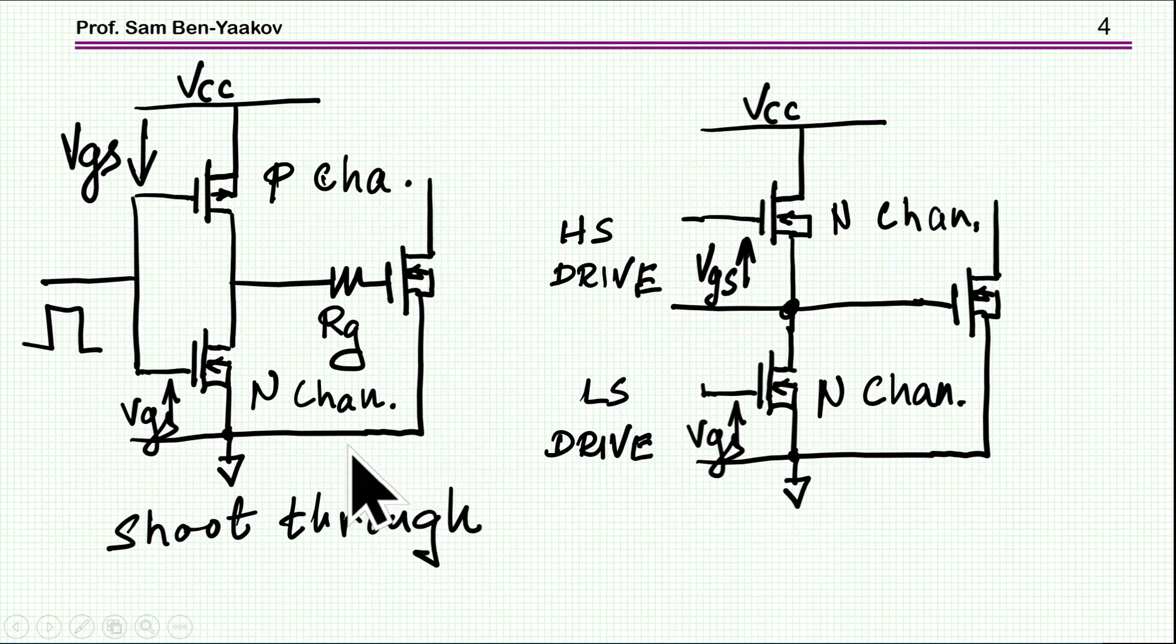Now in this application note, TI suggests to use two transistors, two N-channel transistors, which is better even from the fact that N-channel transistors is better than a P-channel in terms of RDS-on and cost. And however, in this case, you need two drives. You have to drive this transistor and then this transistor separately.